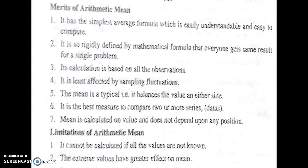As for demerits, extreme values have a greater effect on the mean — larger values have a greater influence. That is all about the arithmetic mean of central tendency. I hope you understood — it is very simple.